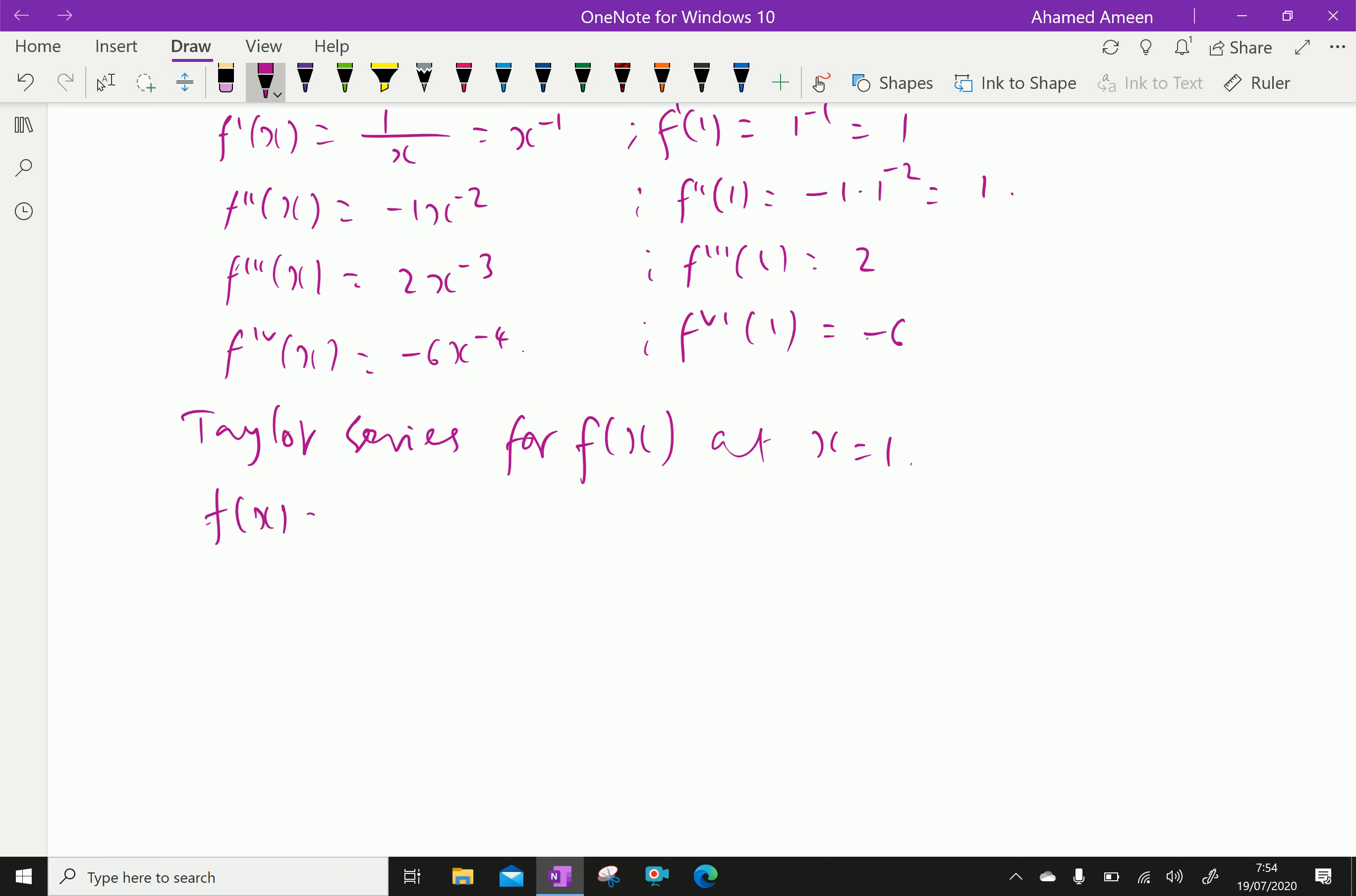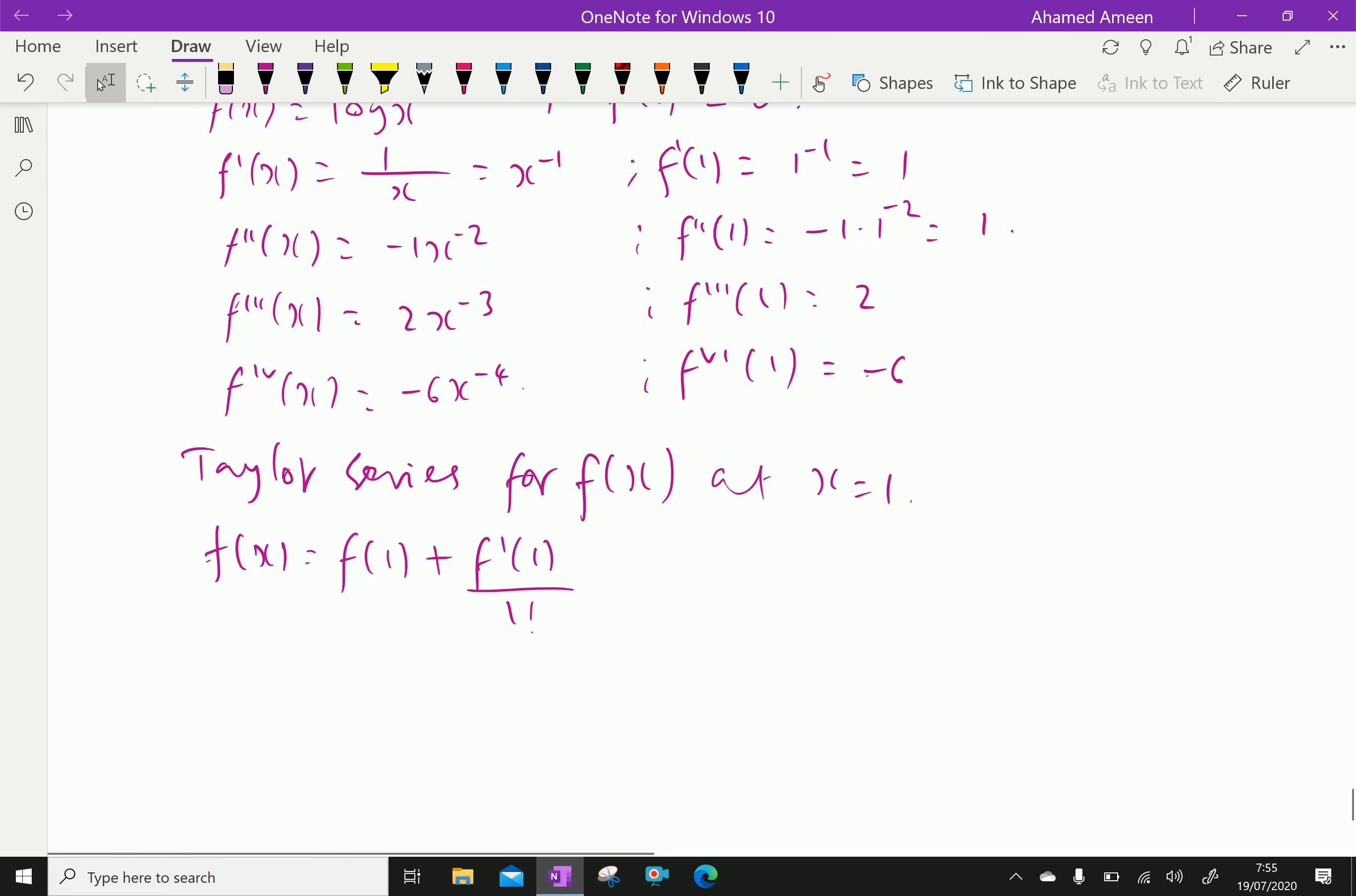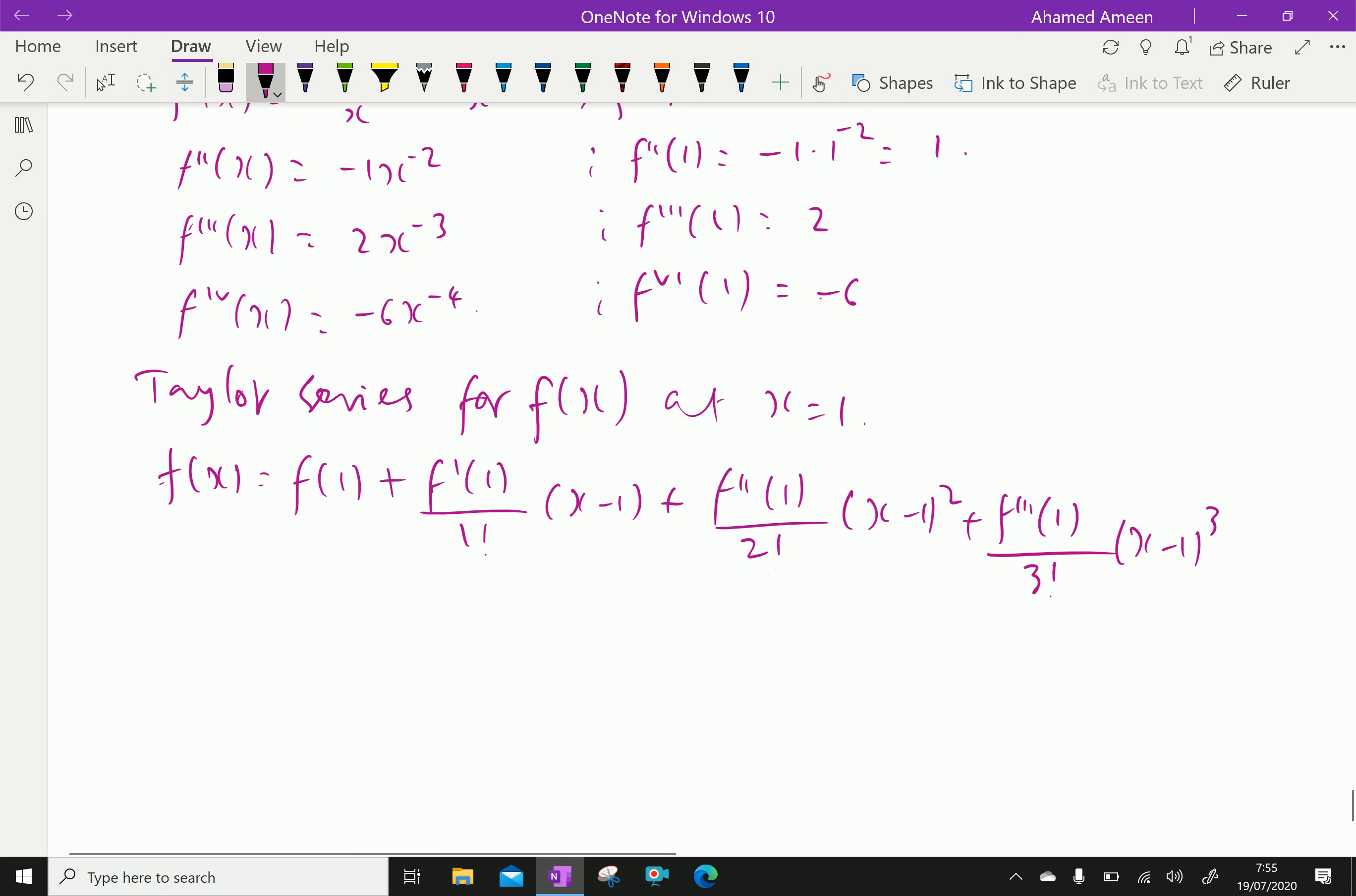Taylor series for f(x) at x=1: f(x) = f(1) + f'(1) over 1 factorial times (x-1) plus f''(1) over 2 factorial times (x-1)² plus f'''(1) over 3 factorial times (x-1)³, and it expands.